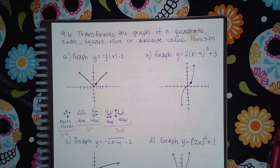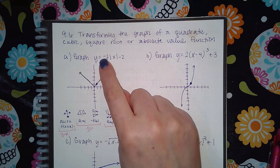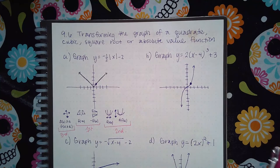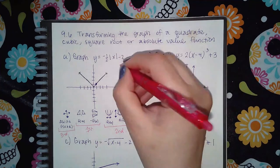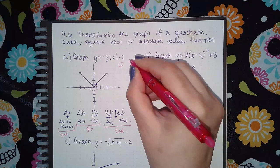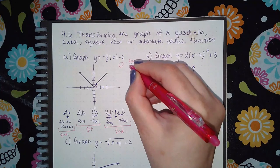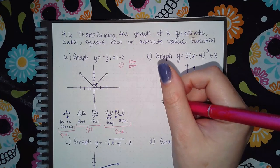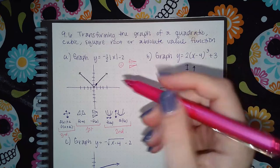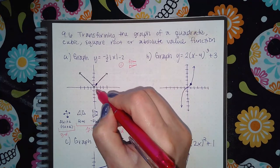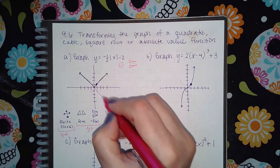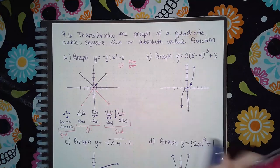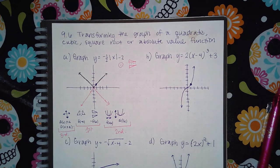For this problem, I see a negative outside the absolute value bars, so the first thing I'm going to do is click that reflection button. I'll try to reanimate this and draw what you'll see on the computer for each step, bolding out the final answer so you can see what it should look like. When I click this button, it's going to flip the graph over — so the absolute value will be reflected, flipped upside down.